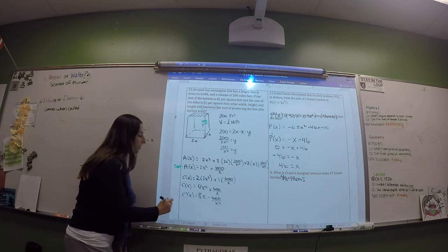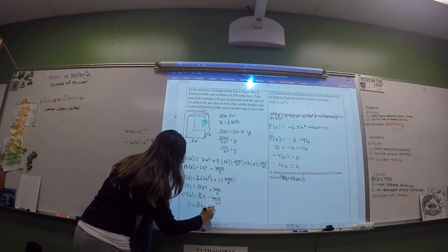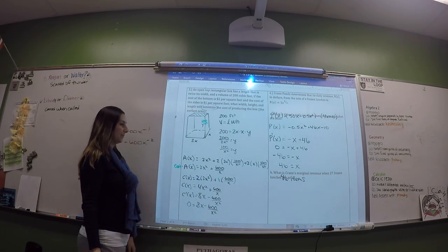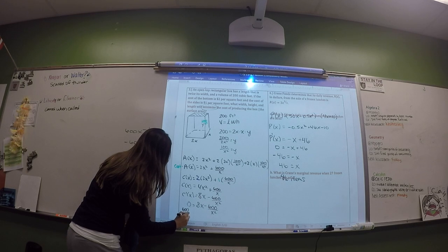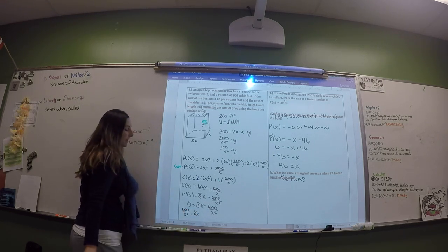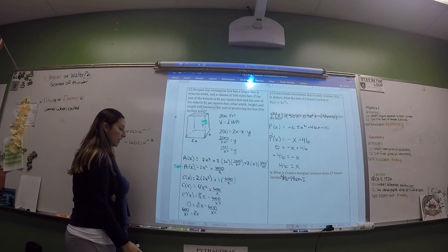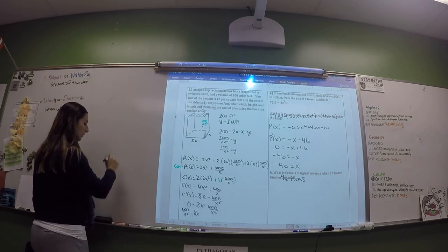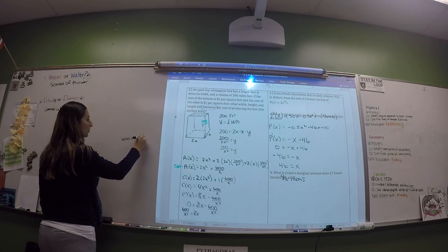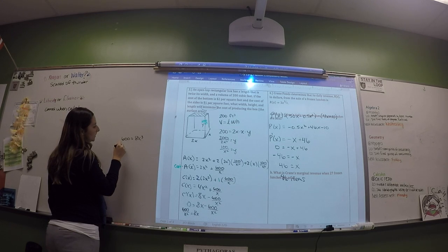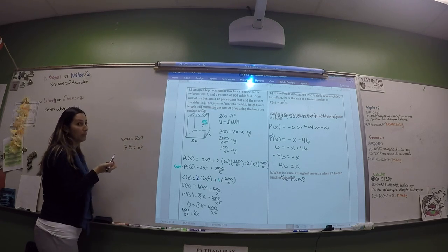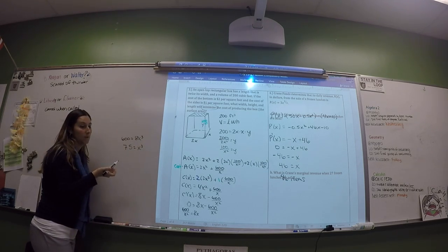Set that equal to 0 and solve. Add 600/X squared to the other side and multiply by X squared: 600 equals 8X cubed. Divide by 8 to get X cubed equals 75. Then take the cube root of 75.